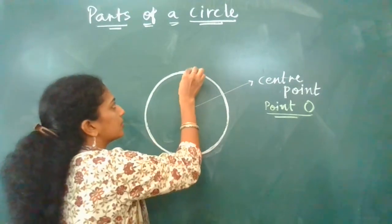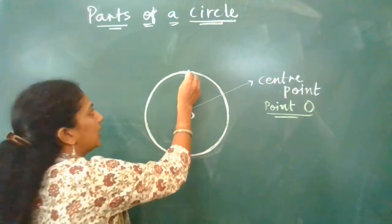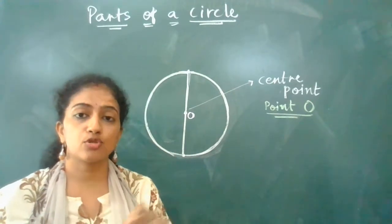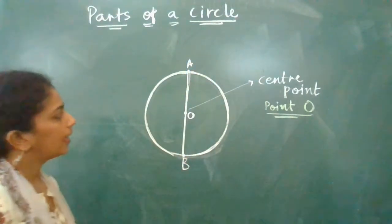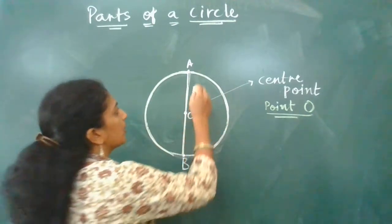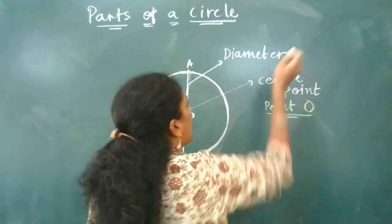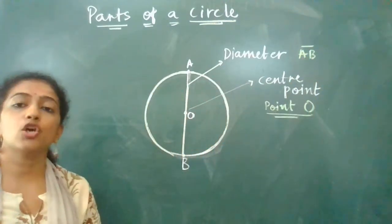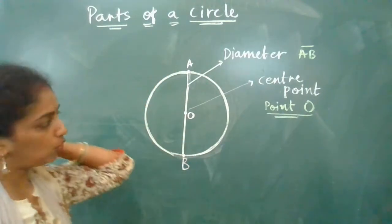Here I have drawn a diameter — vertical. If you wish you can draw it slant or horizontal, but the condition is it should pass through the center point. The diameter is a line segment which joins two points on the circle. When joining two points, you have to name them. If nothing is specified in your question, you can give your own name. Let's name the two points A and B. So the diameter is line segment AB — you can also name it line segment BA.